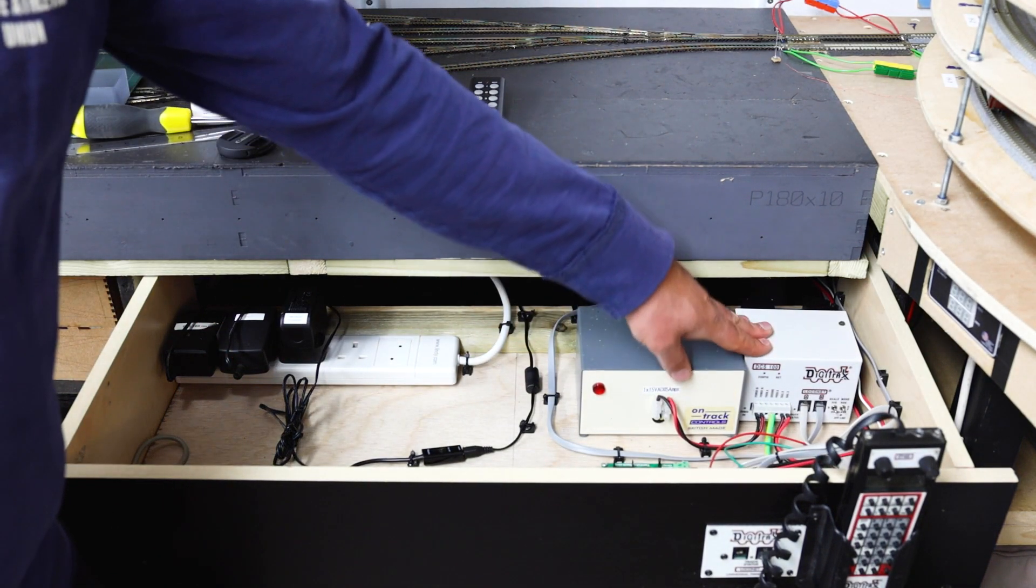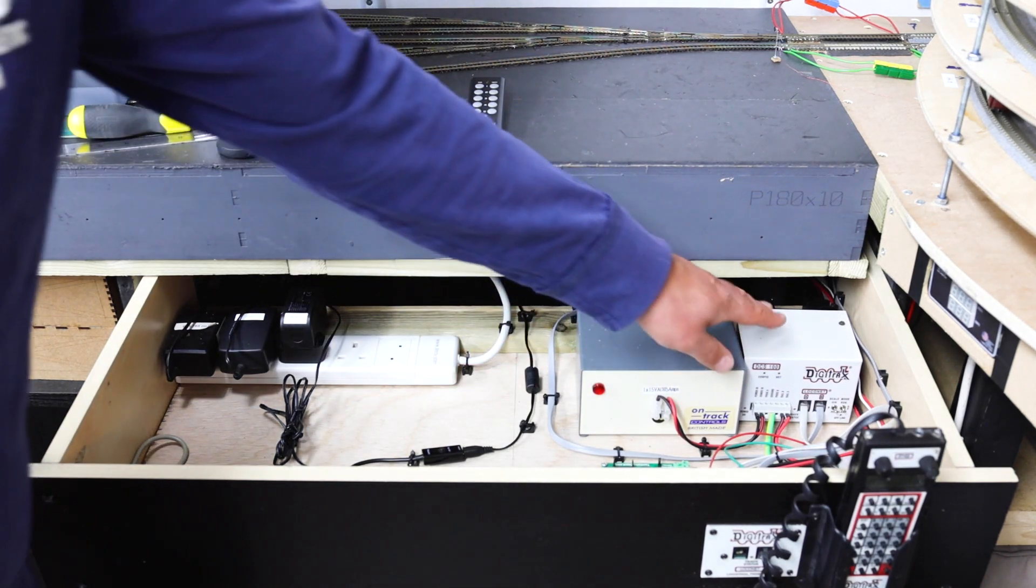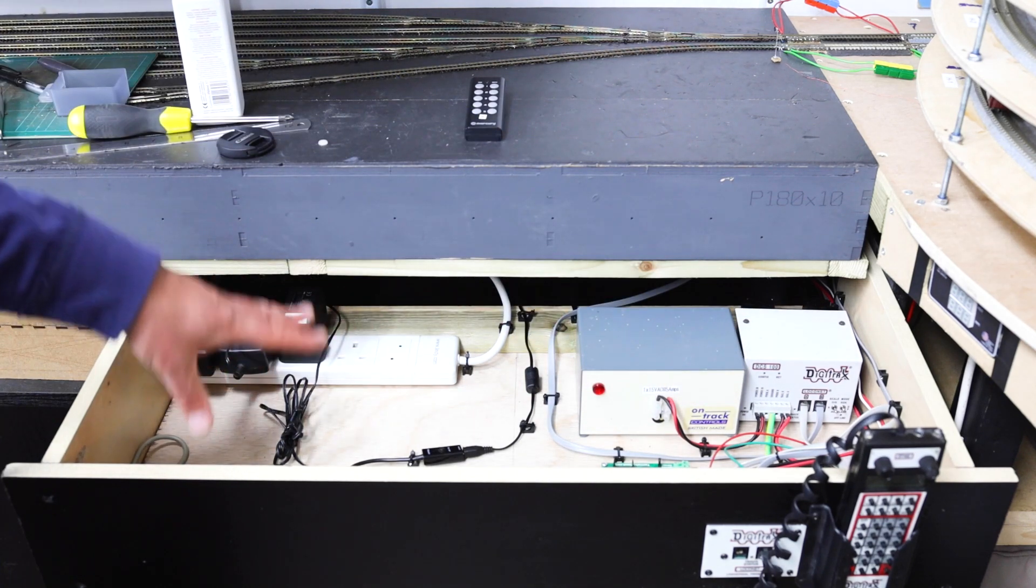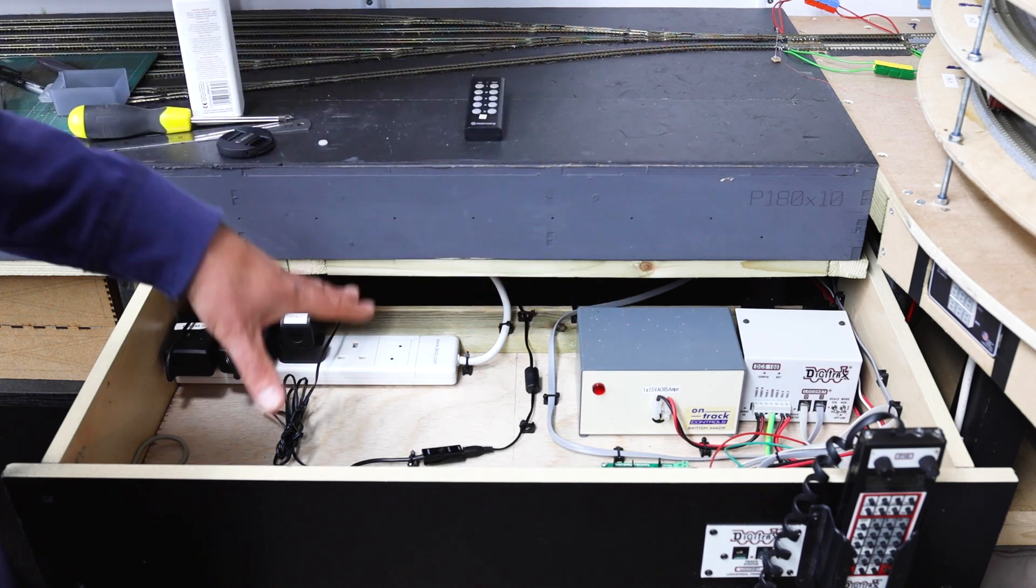I've got the DCC command station, which is the Digitrax DCS-100. That's over 20 years old. Still going strong. The power supply and a few other components. I'm going to give you an overview shot now so you can see exactly what's in this drawer.